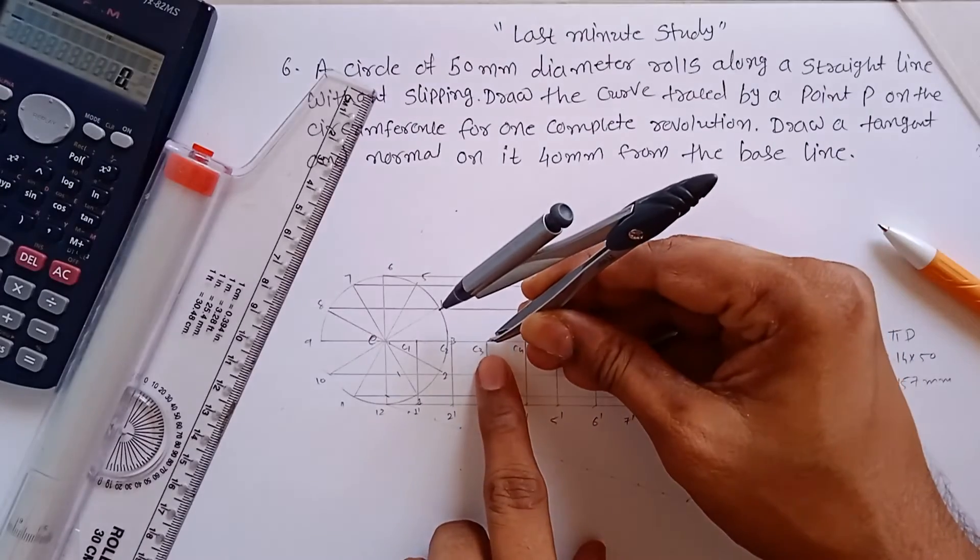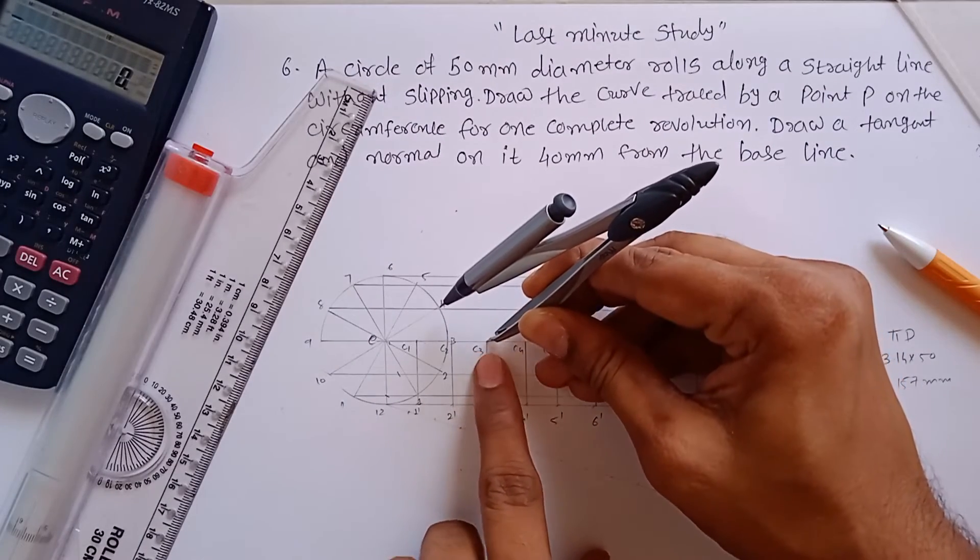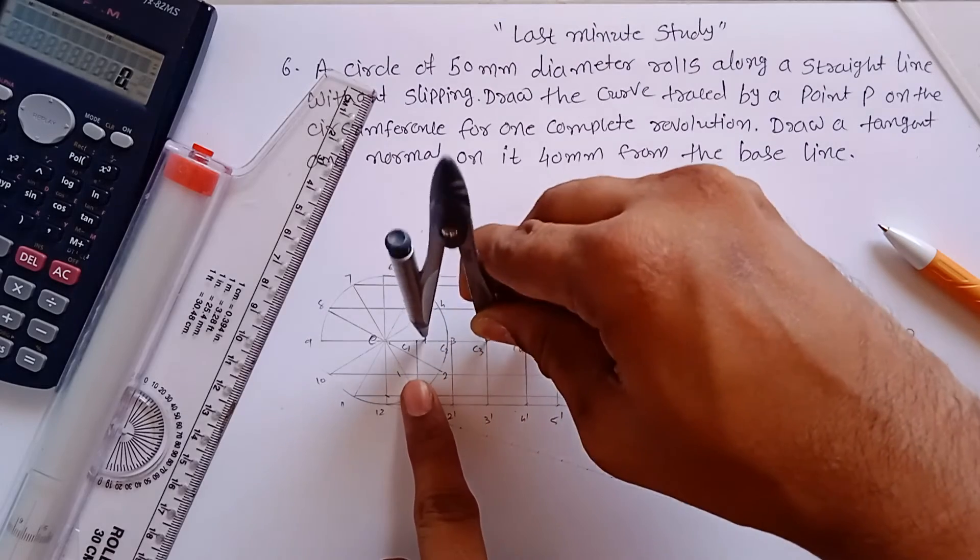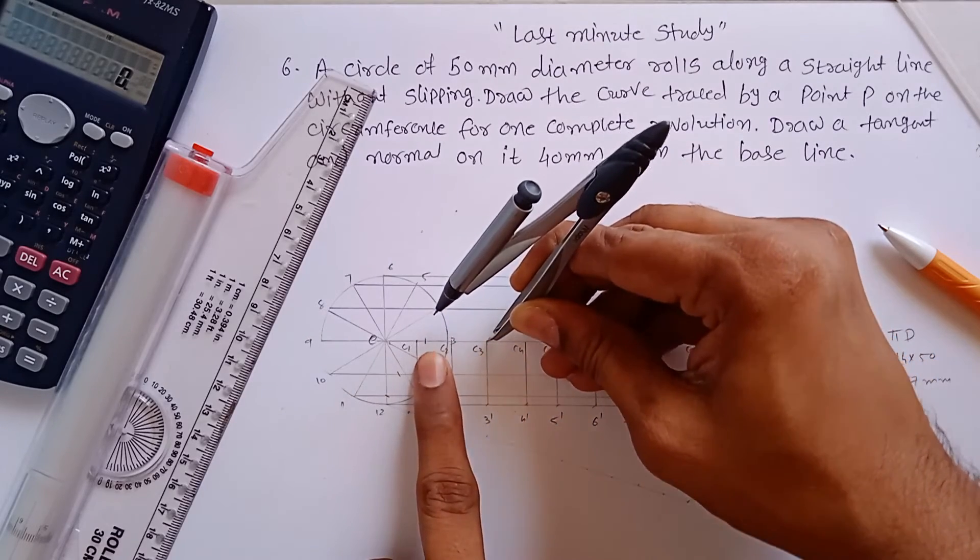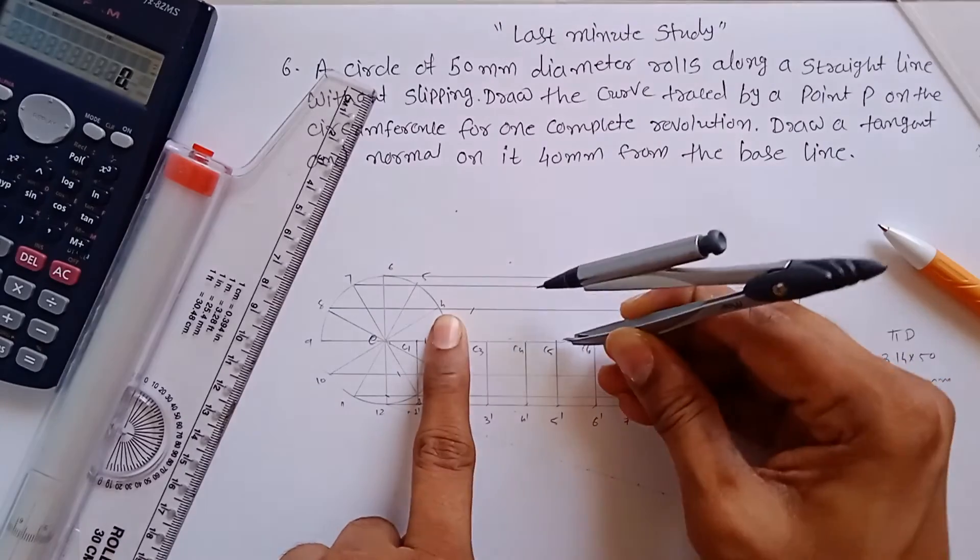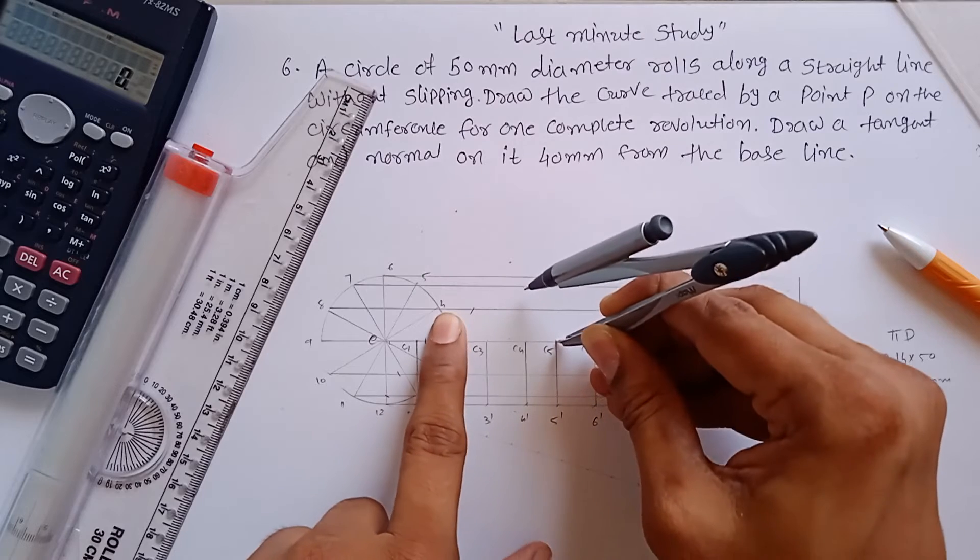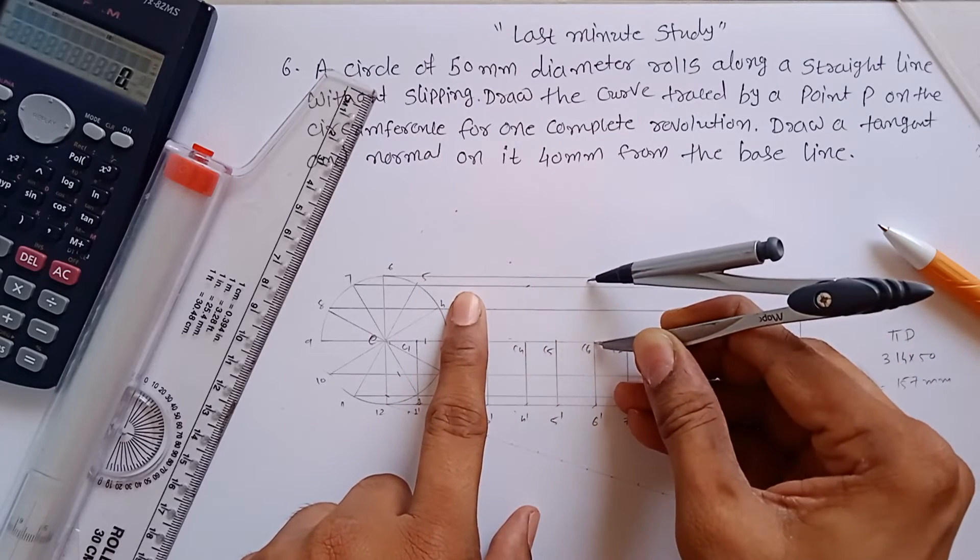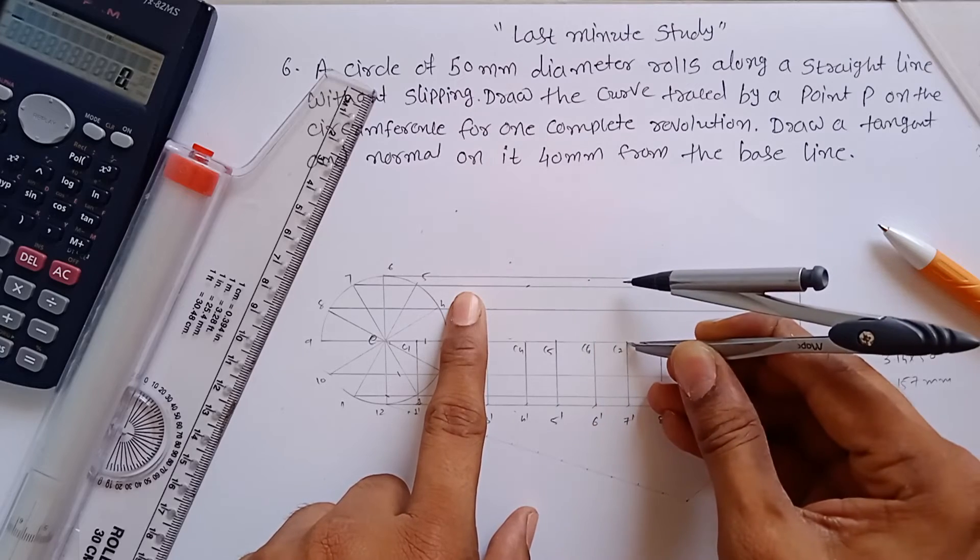Likewise, you have to follow the rule: C3 as a center and line passing from 3 which is on the line. C4 as a center, line passing from 4, which is this. 5 as a center, 5 like this. This is 6, this is 7.